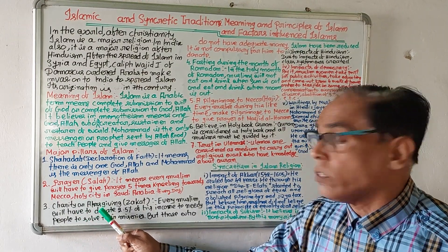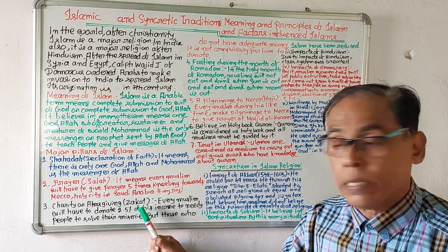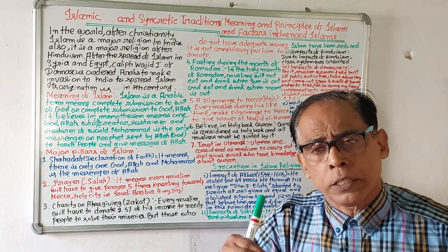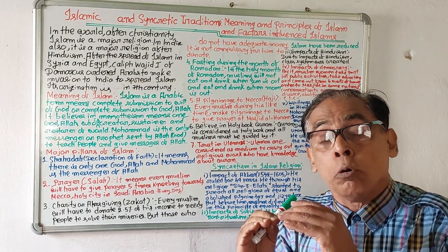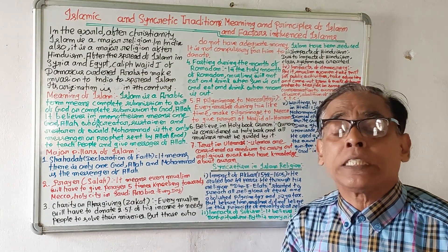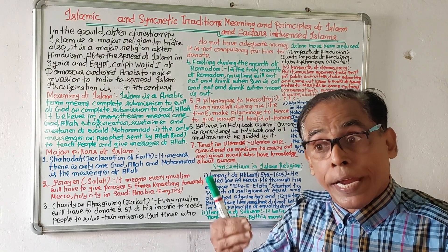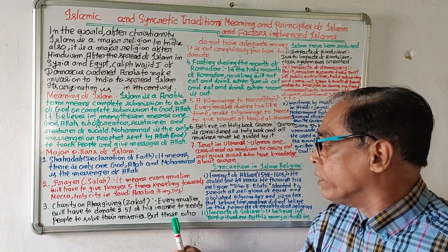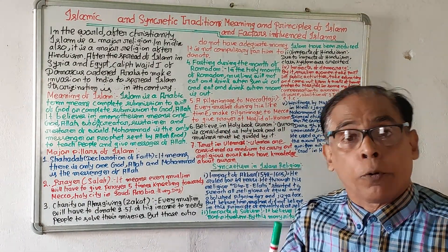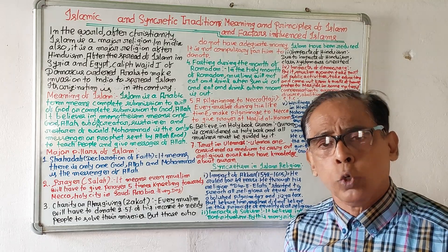Number three is charity or almsgiving, Zakat. It means every Muslim will have to give 2.5 percent of his income to poor people. It is the duty of every Muslim to donate 2.5 percent of his income to end the miseries of the poor. However, those who do not have adequate money are not compelled to donate.